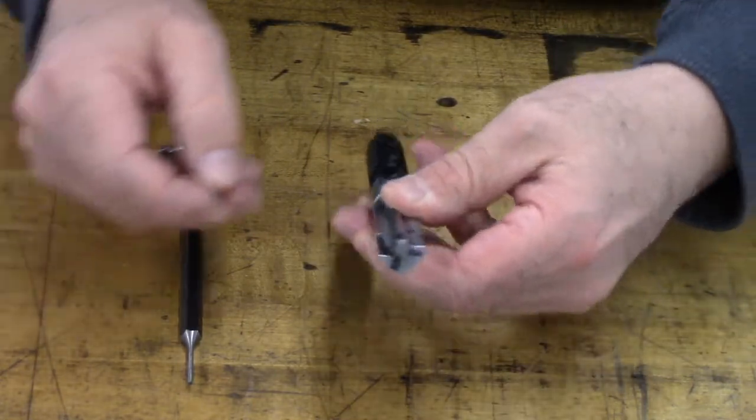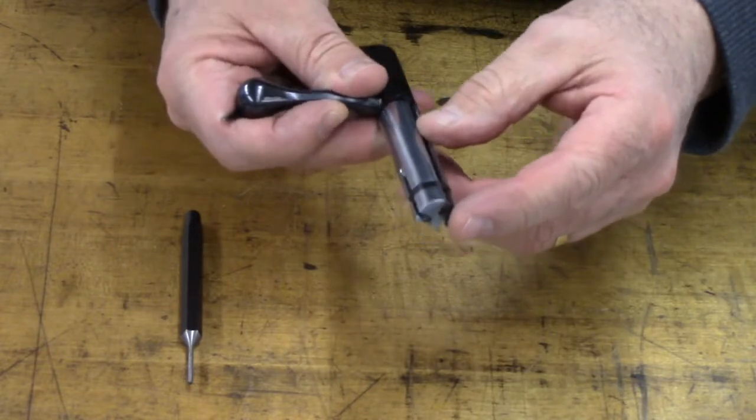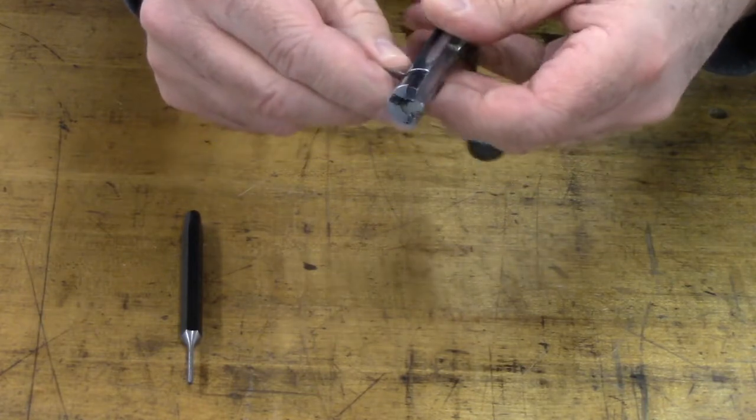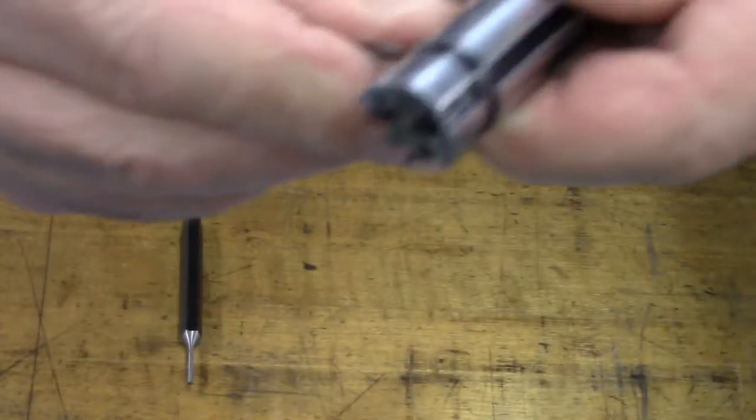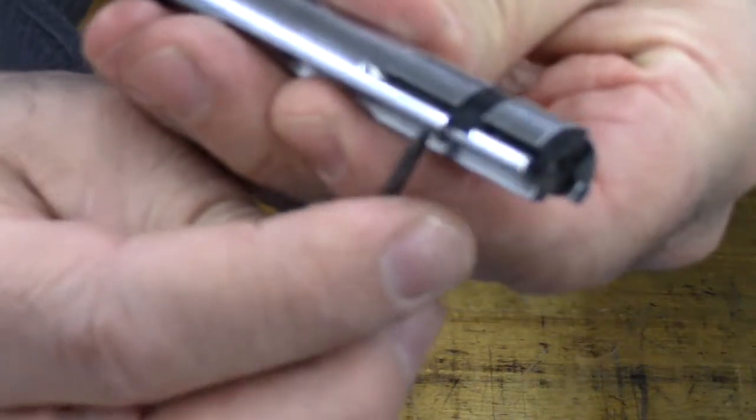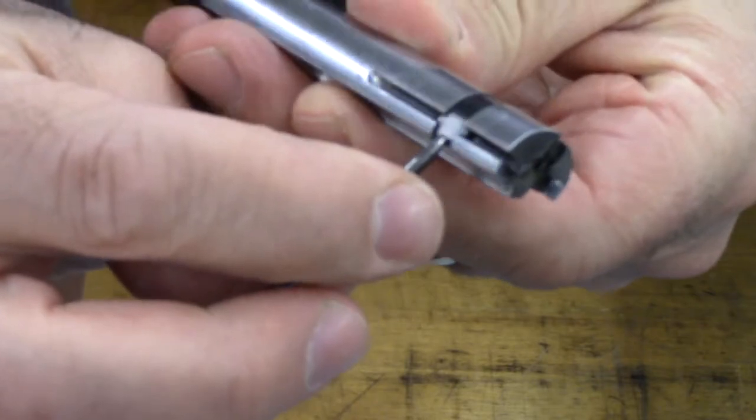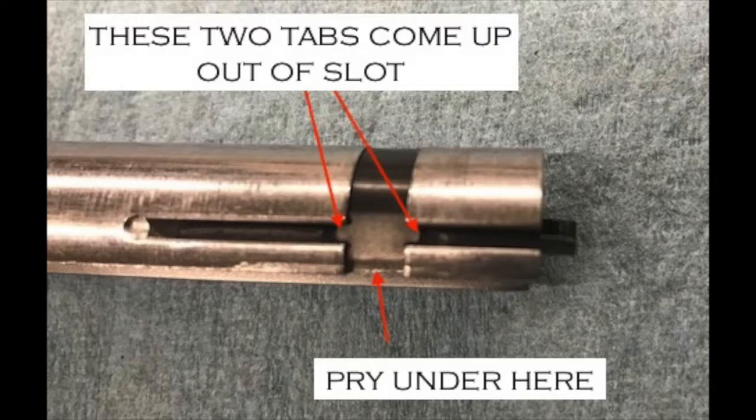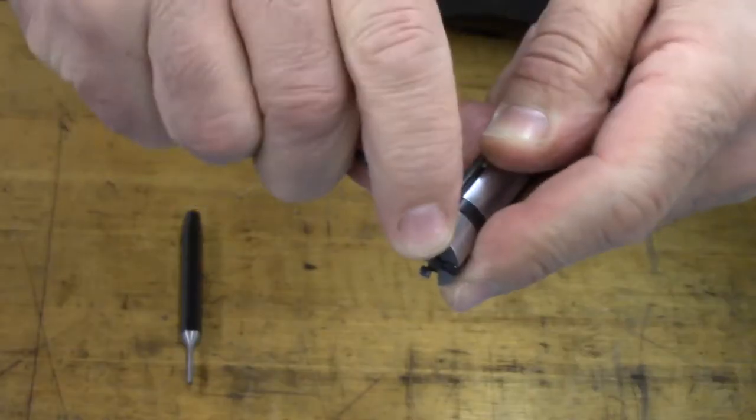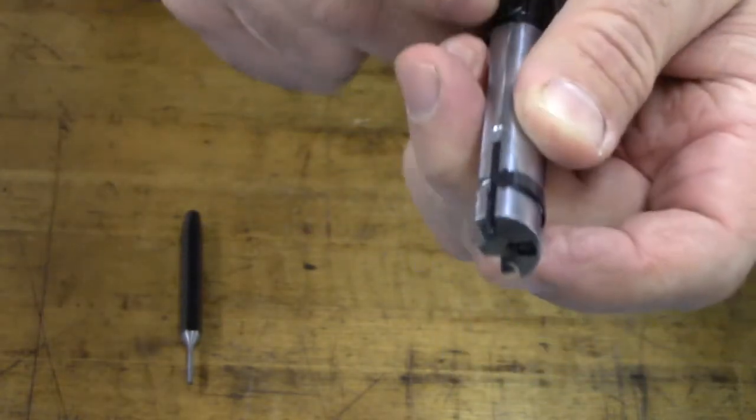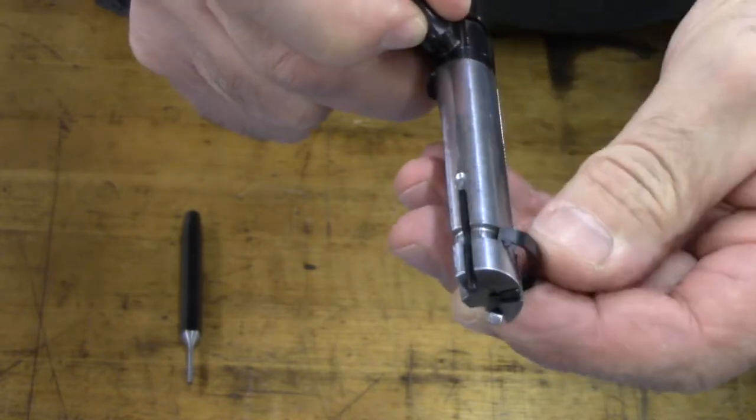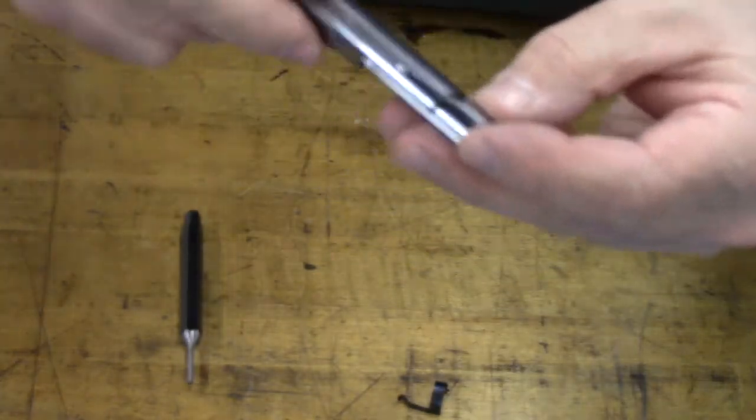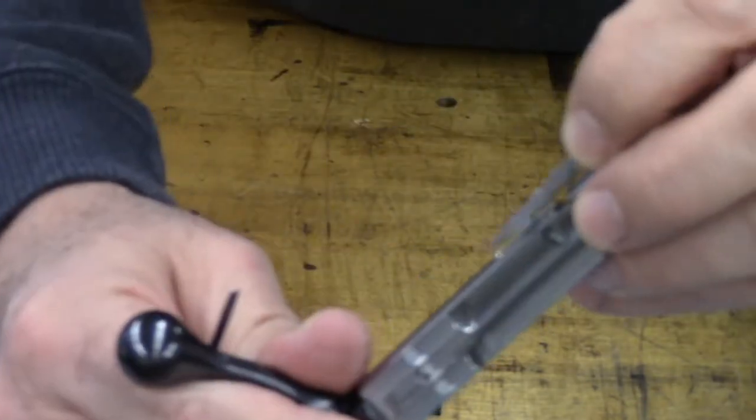The first thing we need to do is we're going to go to the front end of the bolt and on the right side we need to get that little screwdriver underneath this extractor retaining spring. So I'm going to sneak in underneath right here and pry that up. Just like that, I pried it up out of that slot and then just walk that off. Once we do that, the extractor will come right out of its slot.